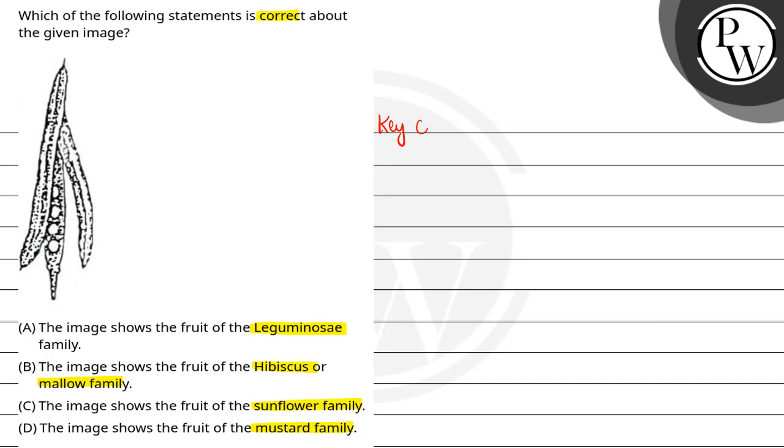So the key concept here is fruit. Fruit kya hota hai? It is the fertilized ovary.